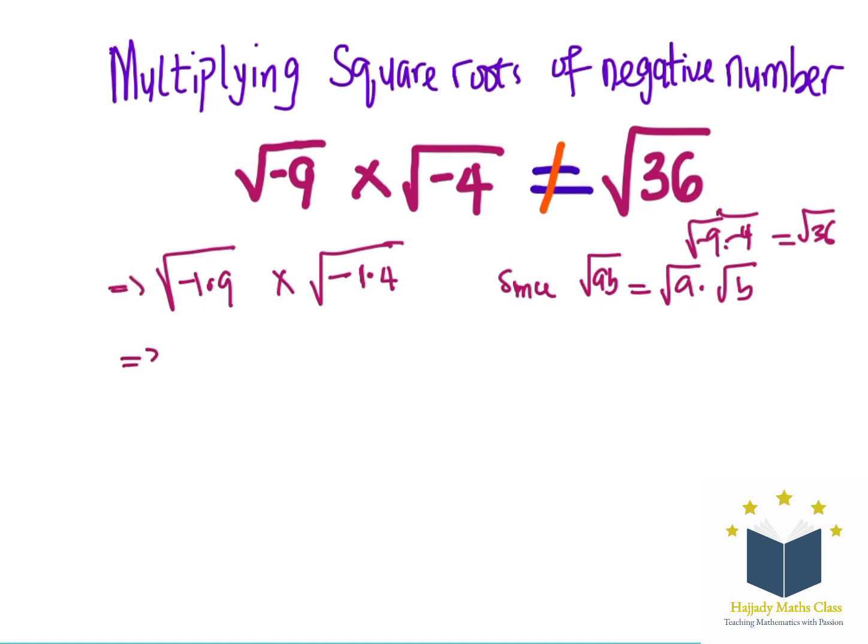This implies that we can split this into 2 by having negative 1 multiplied by 9 times negative 1 multiplied by root 4.